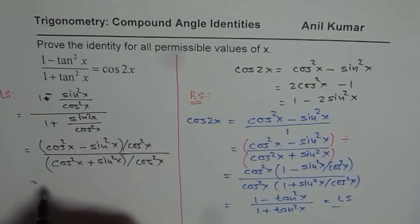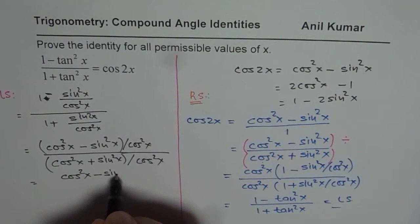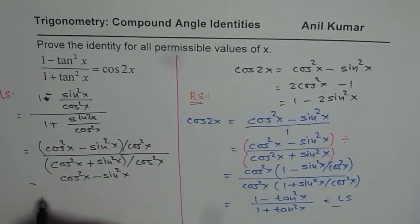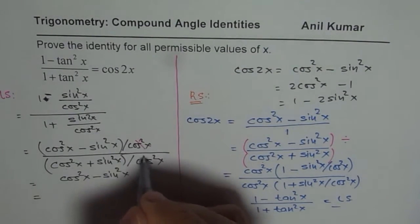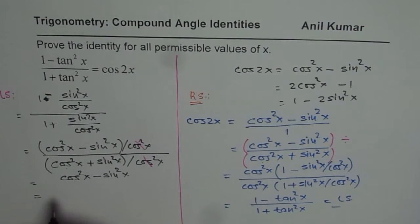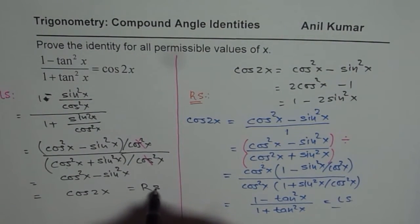Now they get cancelled off, so you get cos square x minus sin square x, and that is 1, cos square x plus sin square x. And these get cancelled off, and this is 1, and therefore we could write this as cos square x minus sin square x, which is cos 2x, equals the right side.